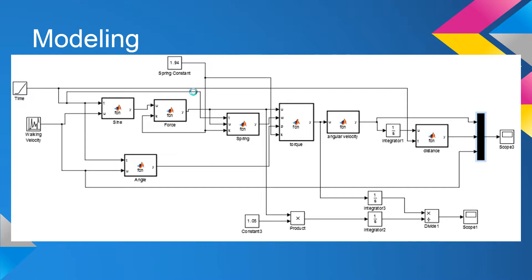Here we have our overall model, and it's pretty complex — there are a lot of things interacting with each other. The basis of our model is that we enter our walking velocity at the speed we want our body to be walking at. That relates to the angle that our knee is bending at and the force necessary to apply to the knee, which eventually spits out a model of how our leg is moving. In this modeling, we have our spring constant — depending on its stiffness, it determines just how far our leg is able to reach with each step.